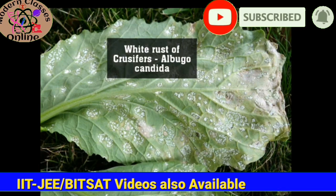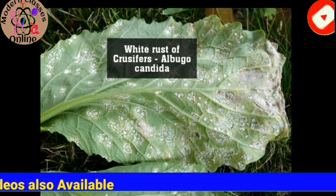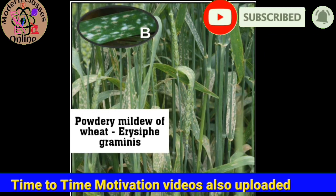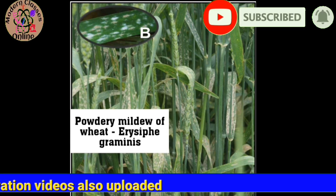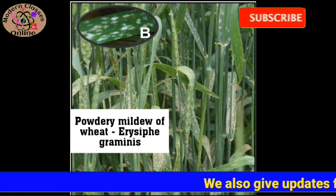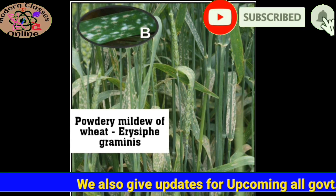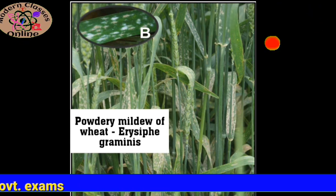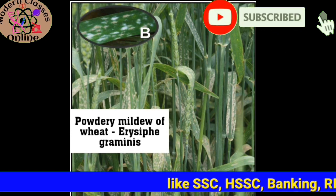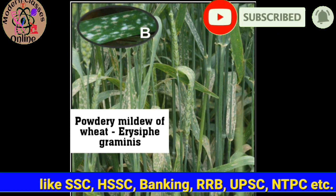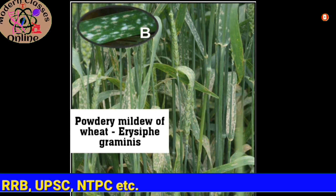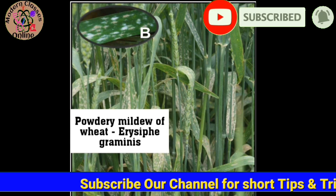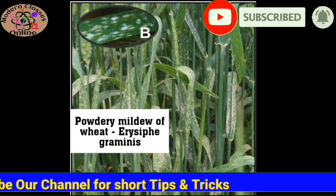This is powdery mildew of wheat. In wheat, we have now covered black rust, brown rust, and now this is powdery mildew of wheat. You will see that the wheat plant has a little powder on it. This is called Erysiphe graminis — it is called powdery mildew of wheat.